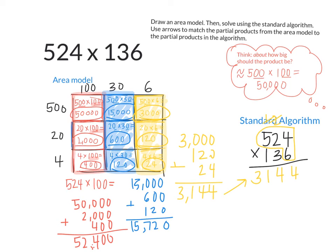Next we would move on to do 30 times 524. We know there's automatically going to be one factor of 0, so put your placeholder 0 there. If you forget your placeholder 0, you will make mistakes. What's 3 times 4? 12. What's 3 times 2? 6, plus 1, 7. What's 3 times 5? 15. So the partial product is 15,720. Hey, look, there it is.